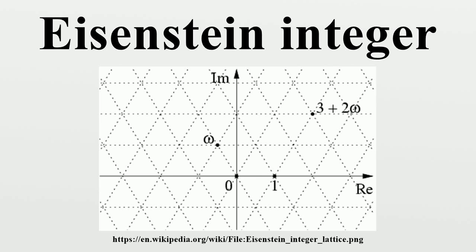To see that the Eisenstein integers are algebraic integers, note that each z = a + b*omega is a root of the monic polynomial. In particular, omega satisfies the equation. The product of two Eisenstein integers is given explicitly by